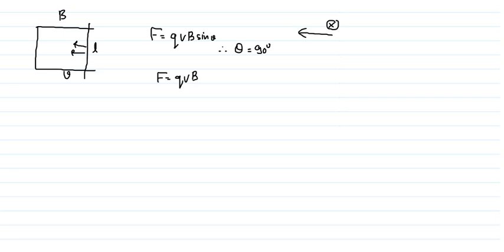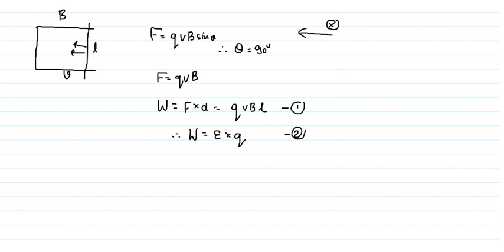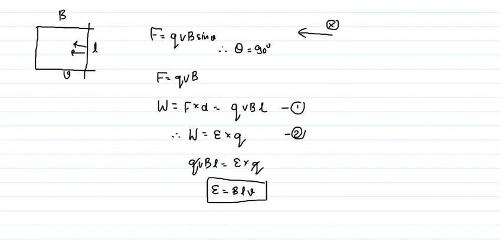The work done when the charge moves a distance L is: W = force × displacement = QVB × L. We also know that work done equals potential difference times charge, so EMF × Q = QVBL. The Q cancels out, and the EMF — or the potential difference between the ends of the rod — is BLV.